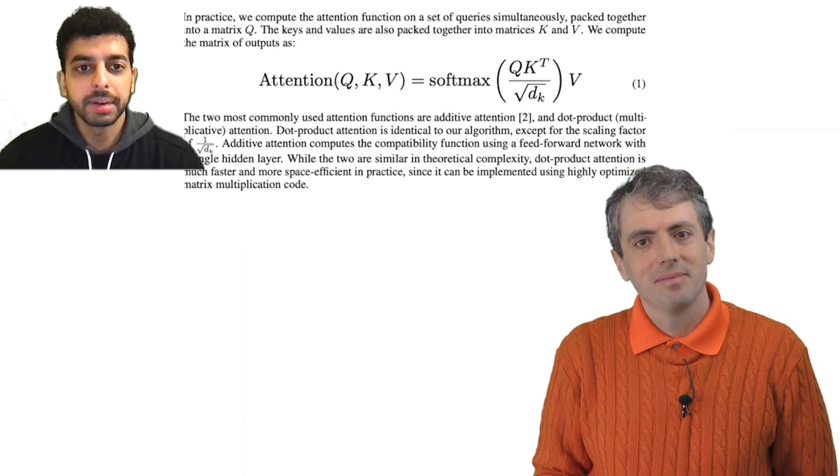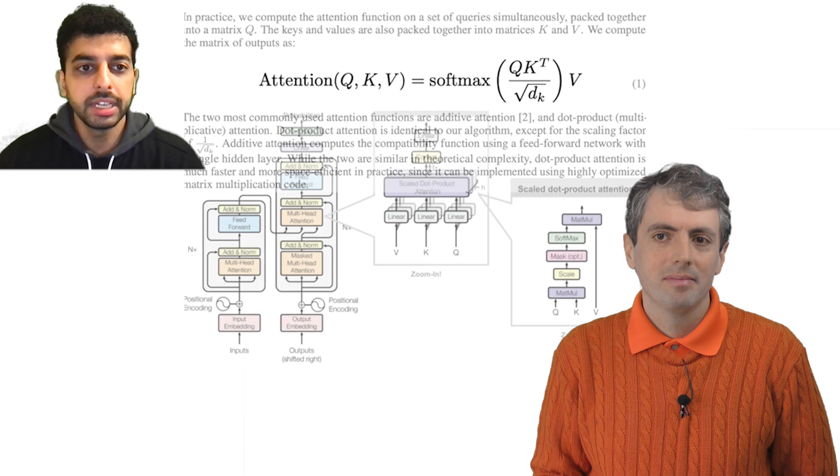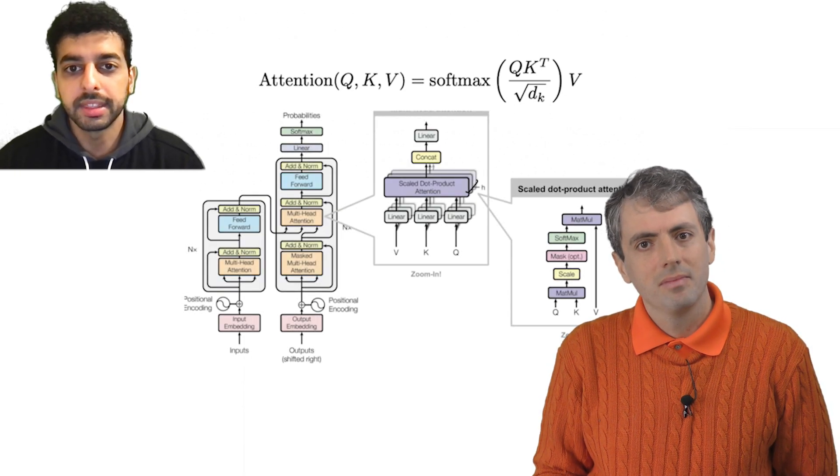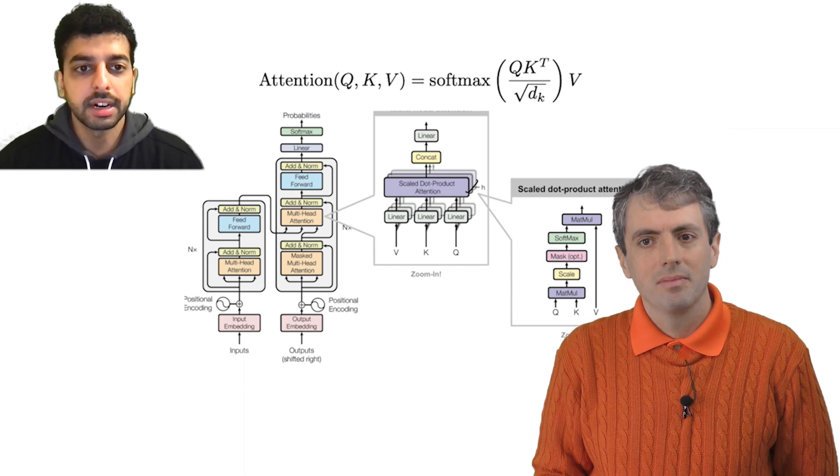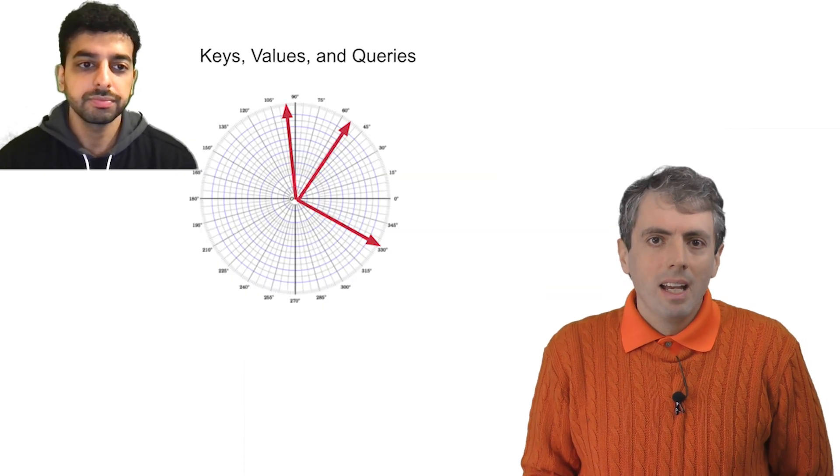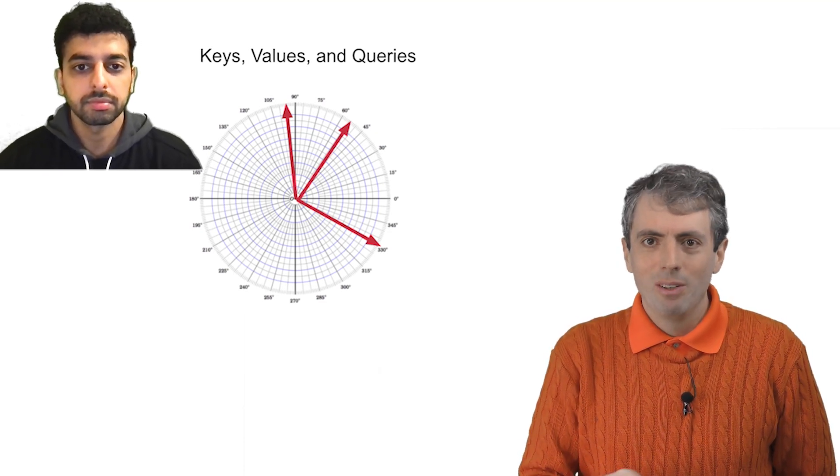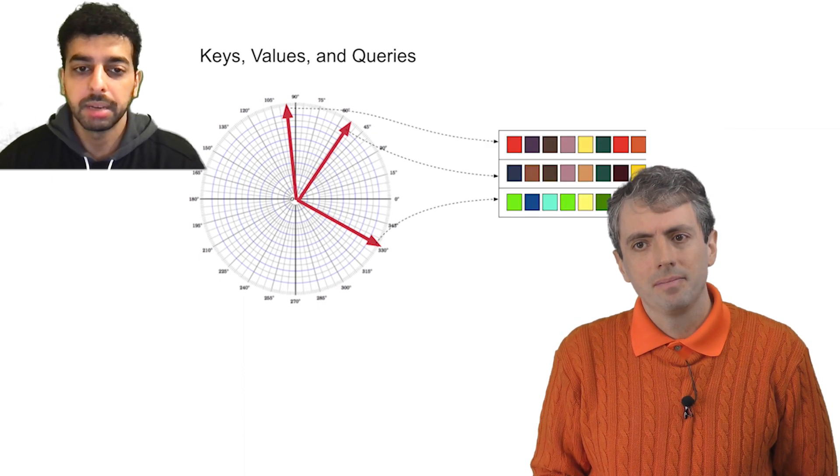One simplistic way to think about this is that you have a table of outputs, the values, and you need to pick which of these values you're going to return. Let's start with the keys. As with most things in neural models, these are vectors. Given the name, each of these keys must be associated with some value, right? That's right. You can think of it as a lookup table.